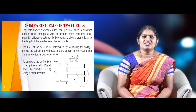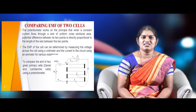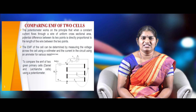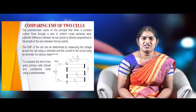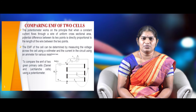The potentiometer works on the principle that when a constant current flows through a wire of length L and uniform cross-section, the potential difference between two points is directly proportional to the length of the wire between those two points.